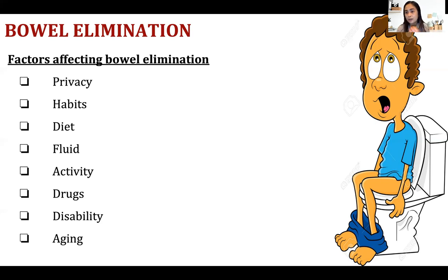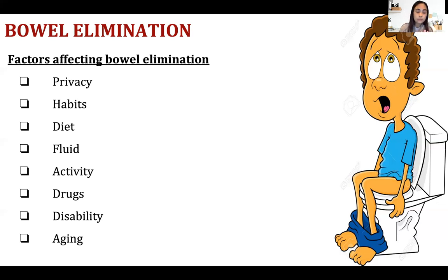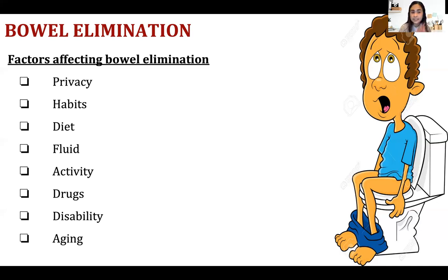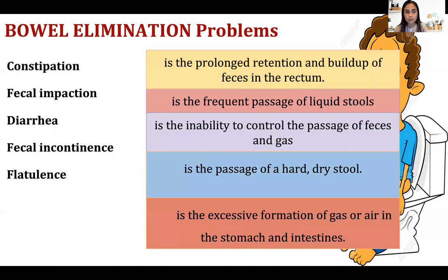Disability — such as being bedridden or having fractures — affects bowel elimination. Aging is also a factor: older persons have decreased peristalsis, which affects bowel elimination, and that is why most of them have constipation or bowel impaction.